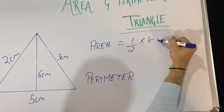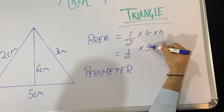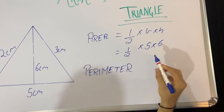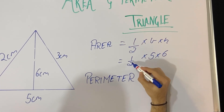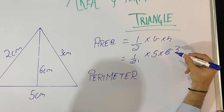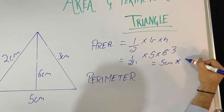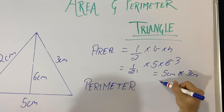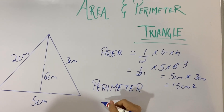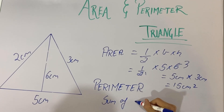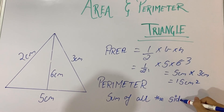The formula of area is half into base into height. Our base is 5 centimeter and height is 6 centimeter. We can reduce: half into 6 gives 3, so 5 centimeter into 3 centimeter gives me 15 centimeter square.